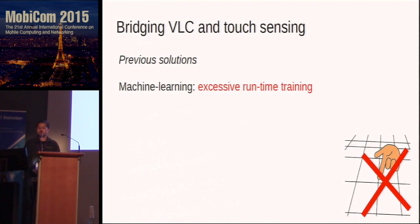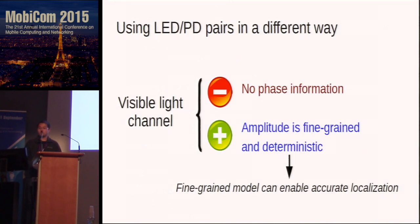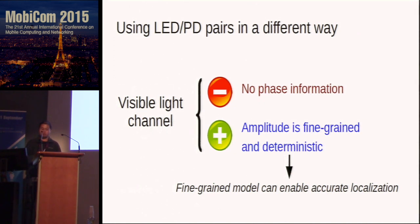The machine learning method has potential to reduce the number of sensors. However, they require excessive runtime training — sometimes lasting up to a few minutes — which makes the system quite impractical. To avoid these drawbacks, we propose to use the LED and PD pairs in a different way. The visible light channel contains no phase information, so the conventional AOA or TDOA method can be very hard to implement. However, the amplitude is still fine-grained and deterministic, which means if we have a fine-grained model, we can enable accurate and reliable localization.